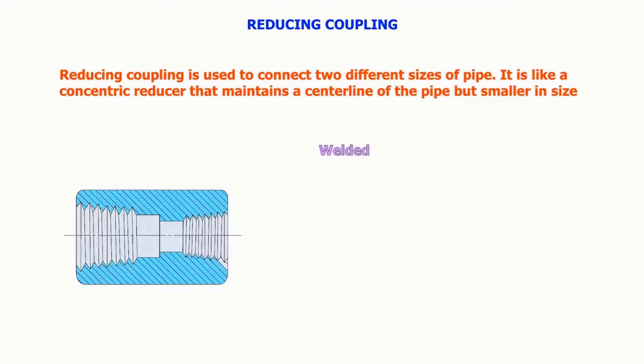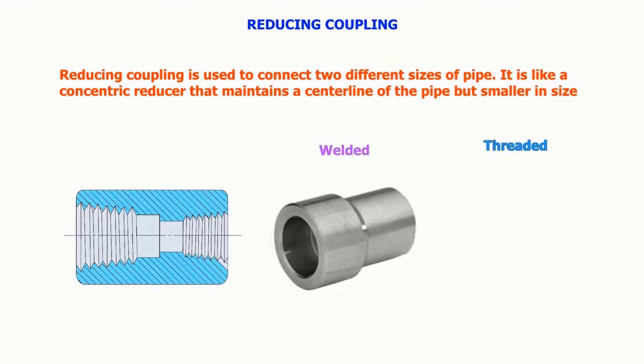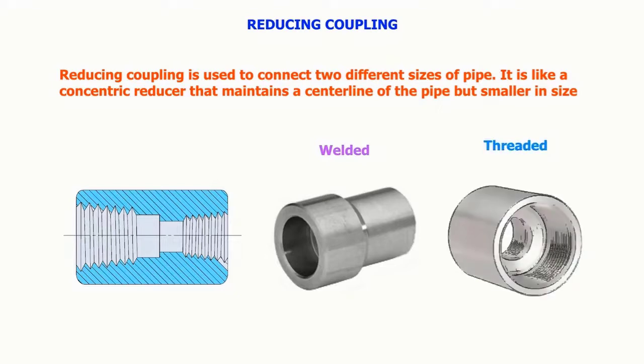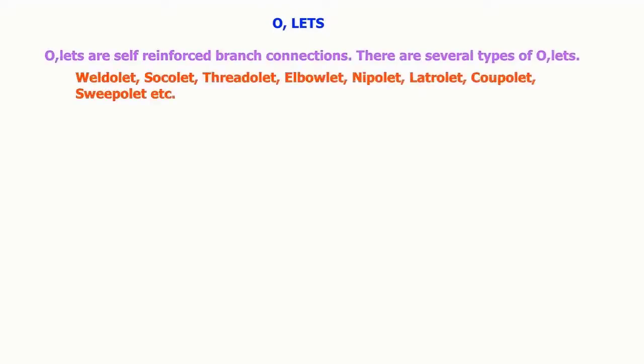Outlets are self-reinforced branch connections. There are several types of outlets: weld-o-let, soc-o-let, thread-o-let, elbow-let, sweep-o-let, lateral-let, coup-o-let, etc.